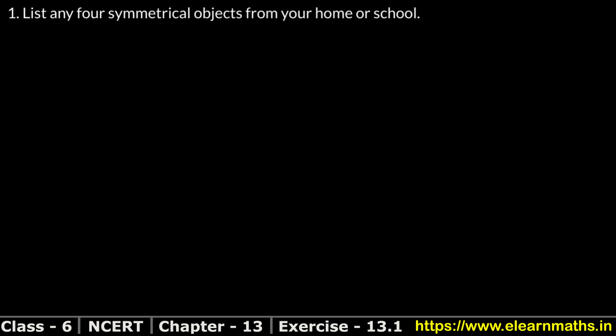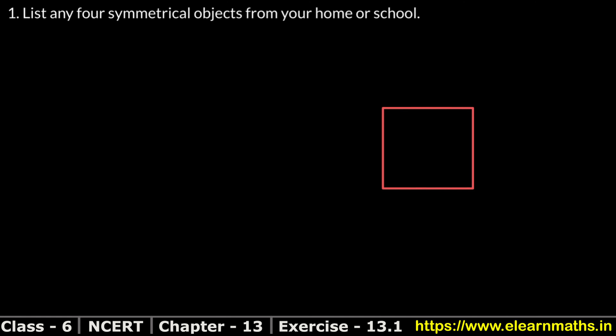Symmetrical objects — we need to name 4, either from school or from home. If I make a square, this square is made. Now, let's draw a line of symmetry. This line of symmetry divides it so that both sides are the same. So what are symmetrical objects? Objects where a line of symmetry makes both portions identical.